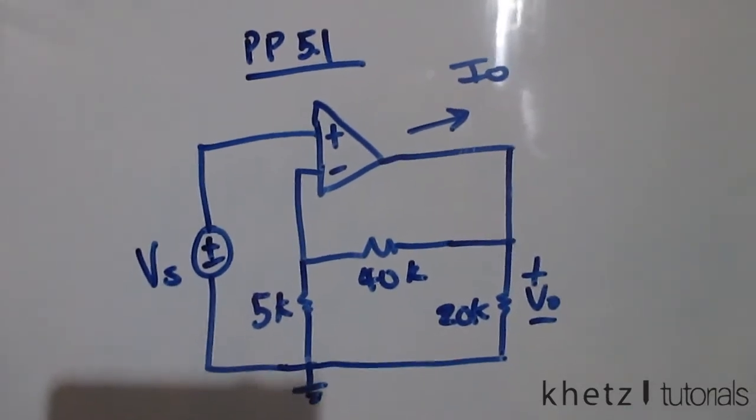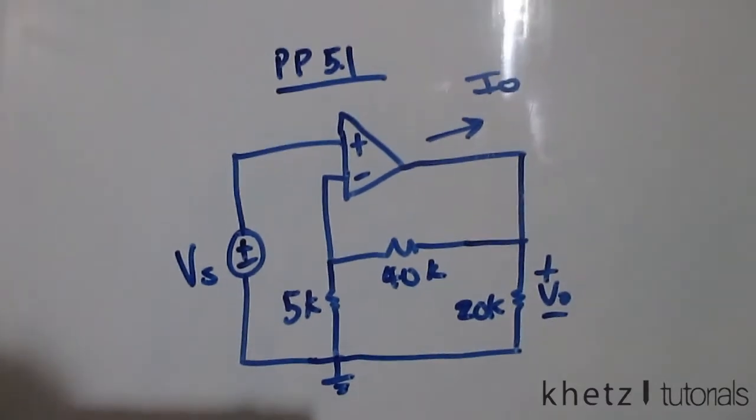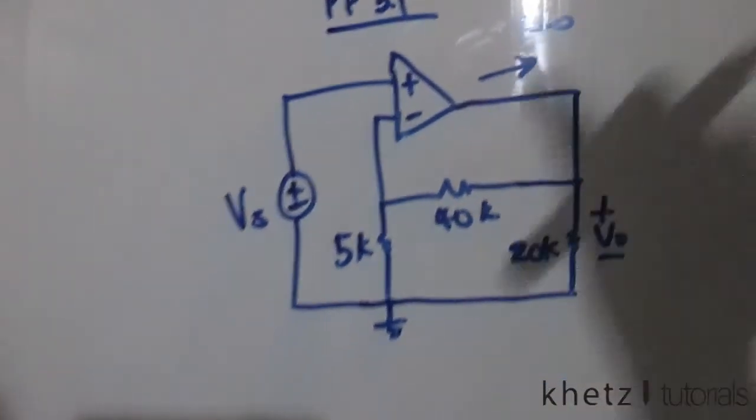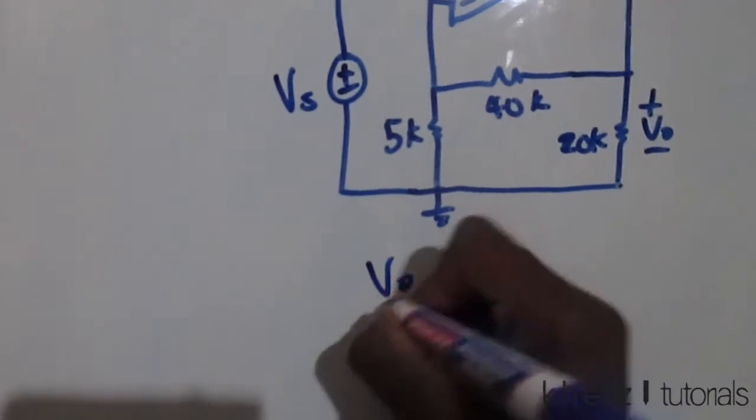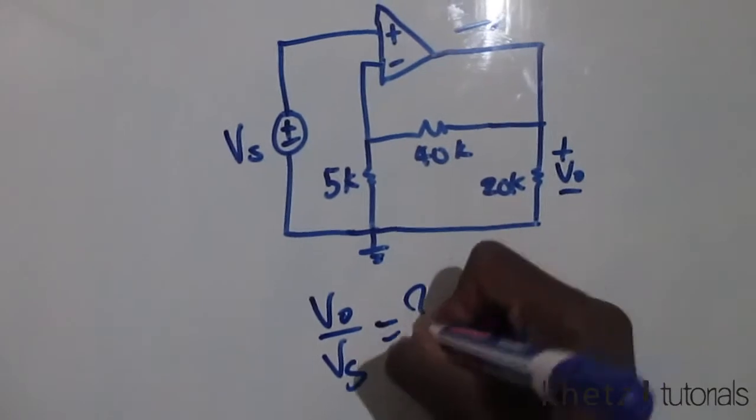Welcome to Kat's tutorials. In this video, we're going to be doing practice problem 5.1. We are asked to find the closed loop gain vo divided by vs.